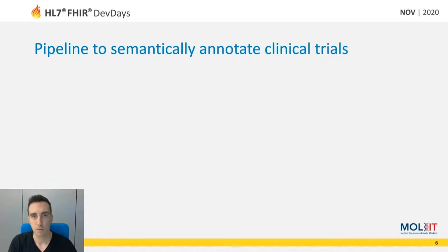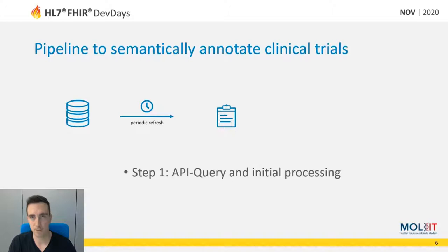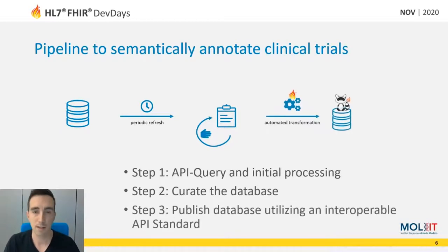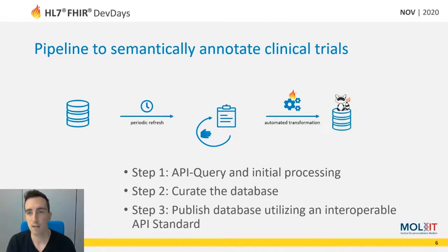To confront this problem, we established a pipeline to semantically annotate clinical trials. First, we query an API and process it to a human-readable format. In a second step, the database is curated, and in a third step, a second transformation is executed and the transformed data is published in an interoperable API standard.